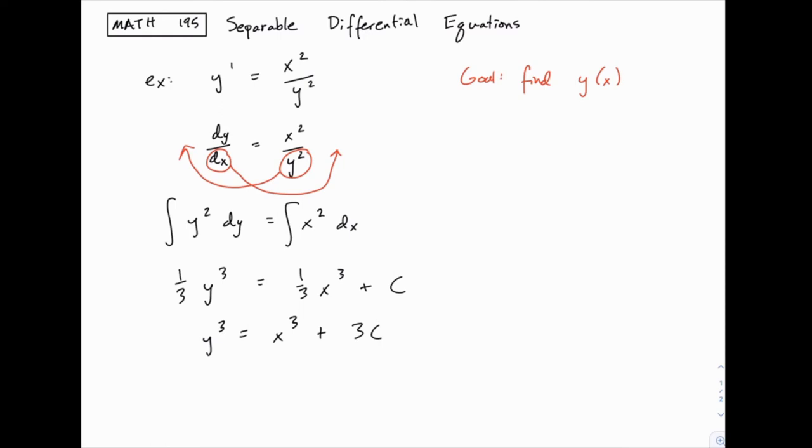And at this point if you want to you could instead of writing 3c you could just write something like k, because 3 times an arbitrary constant is still just an arbitrary constant. There's no reason really to keep the 3 on it, it doesn't change much. And then we can do one more step taking the cube root of both sides like this.